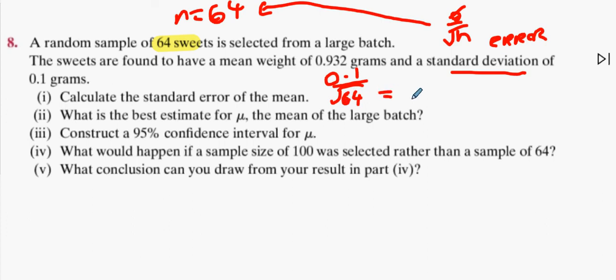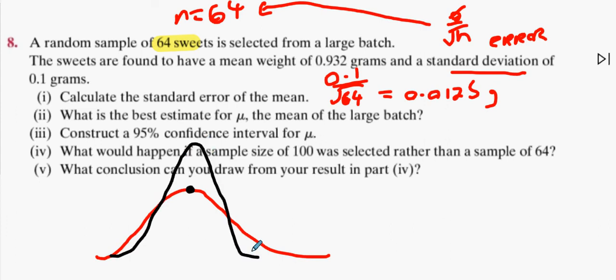So what's the standard deviation? 0.1 divided by root 64 gets me 0.0125 grams. What is the best estimate for mu, the mean of the large batch? If I take all your scores individually and then average groups of four, you should come up with the same average. So mu should be 0.932, exactly the same average.